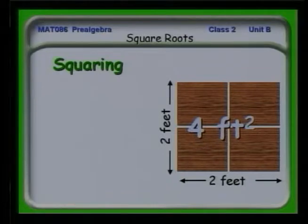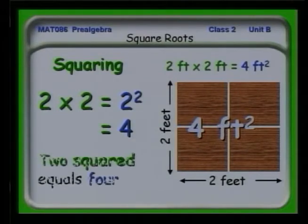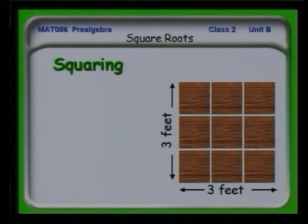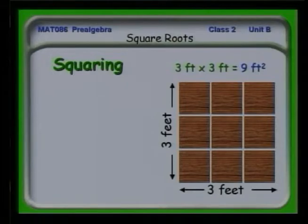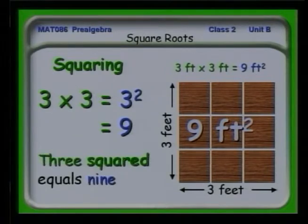If we have 2 by 2, we have 4 square feet or 4 feet squared. 2 times 2 is 2 squared, that's equal to 4, so 2 squared equals 4. And we have a similar process for 3 squared. 3 feet by 3 feet is 9 square feet. 3 times 3 is 3 squared, and that's equal to 9. So 3 squared equals 9.